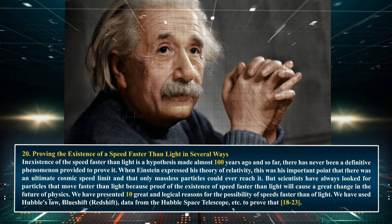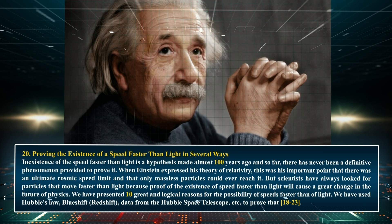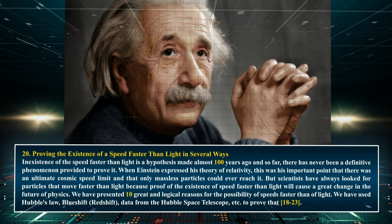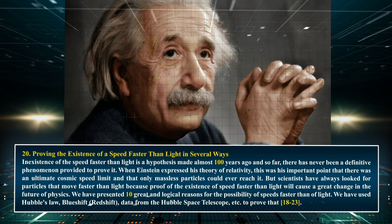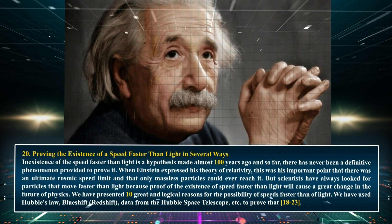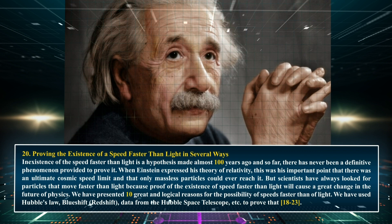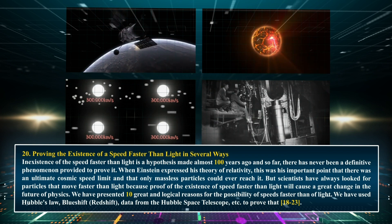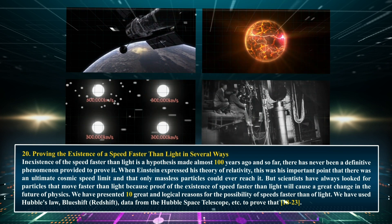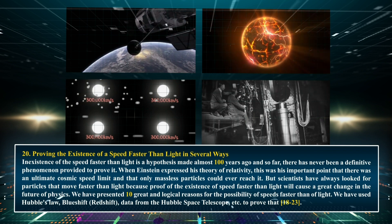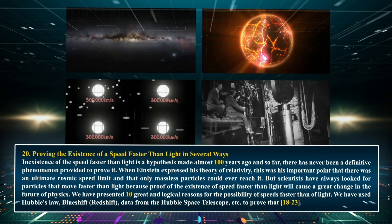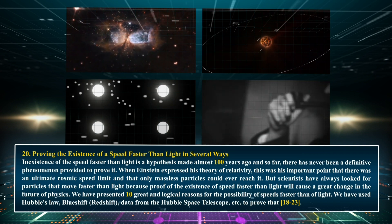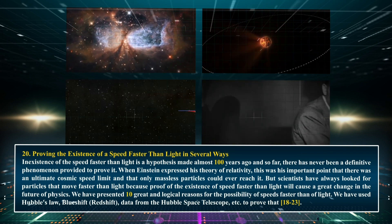Chapter 20: Proving the existence of a speed faster than light in several ways. The non-existence of a speed faster than light is a hypothesis made almost 100 years ago, and so far there has never been a definitive phenomenon provided to prove it. When Einstein expressed his theory of relativity, his important point was that there was an ultimate cosmic speed limit and that only massless particles could ever reach it. But scientists have always looked for particles that move faster than light, as proof of this would cause a great change in the future of physics. We have presented 10 great and logical reasons for the possibility of speeds faster than light.